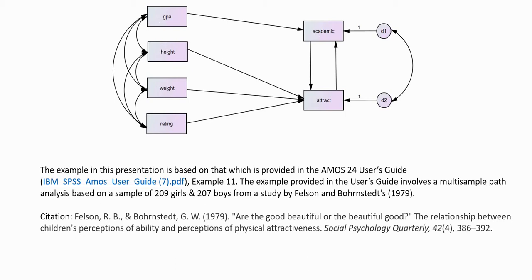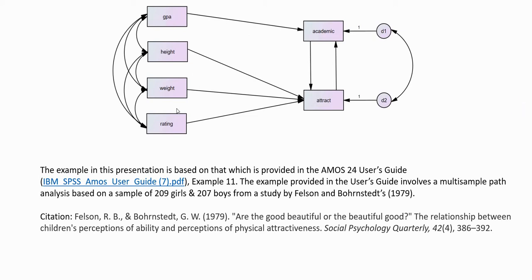For this demonstration, I want to show you how to test for differences between groups on indirect effects by calculating the indirect effect of GPA on attract in each group and then testing the difference. The indirect effect is specified as GPA predicts academic and academic predicts attract — calculated as a product of these two path coefficients, labeled P1 and P2, or P1 and P2 for path 1 and path 2, which is the labeling we'll use in AMOS.